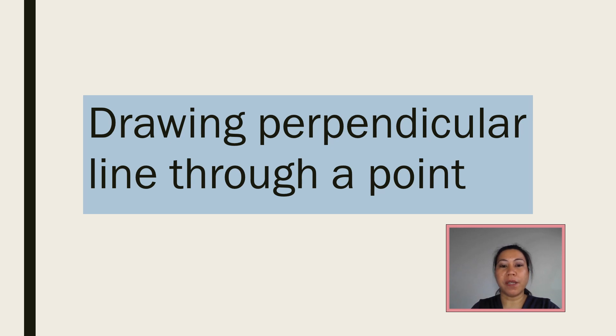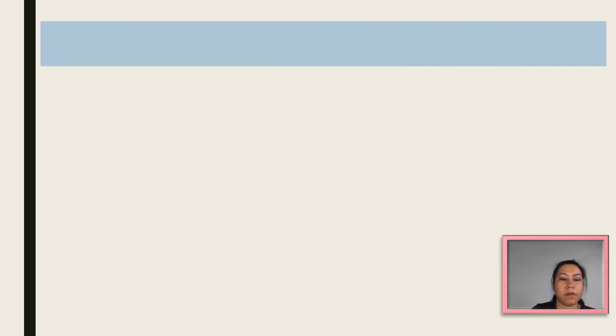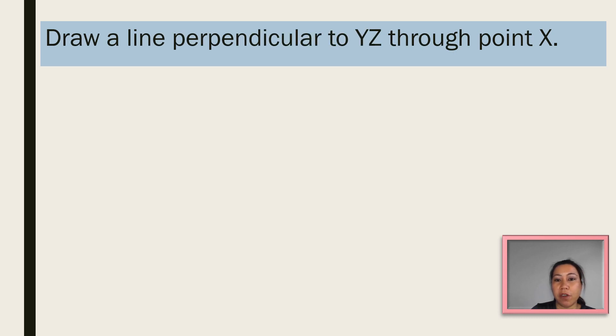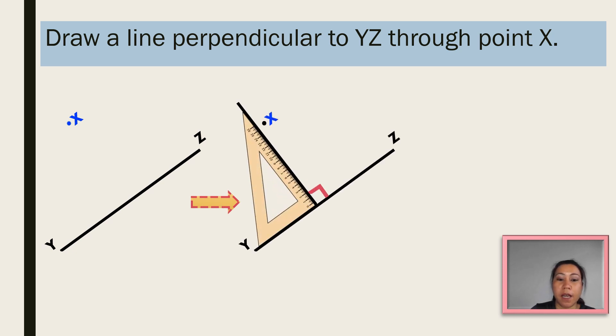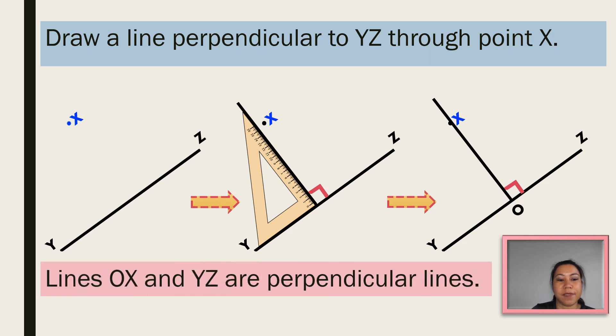We can also draw a perpendicular line through a point. Now, let's draw a line perpendicular to line YZ through point X. Simply, you just get your set square and put it on line YZ and using the edge of the set square, draw a line passing through the point X. And name that line OX. Lines OX and YZ are perpendicular lines. So, line OX is perpendicular to line YZ.